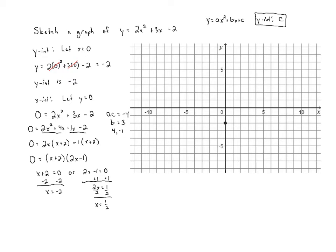Let's plot those. To plot negative 2 we need to go to the left 2. So it's going to go right there. And then for positive 1 half we need to go to the right 1 half which is going to be halfway between 0 and 1. So the other x-intercept is here.